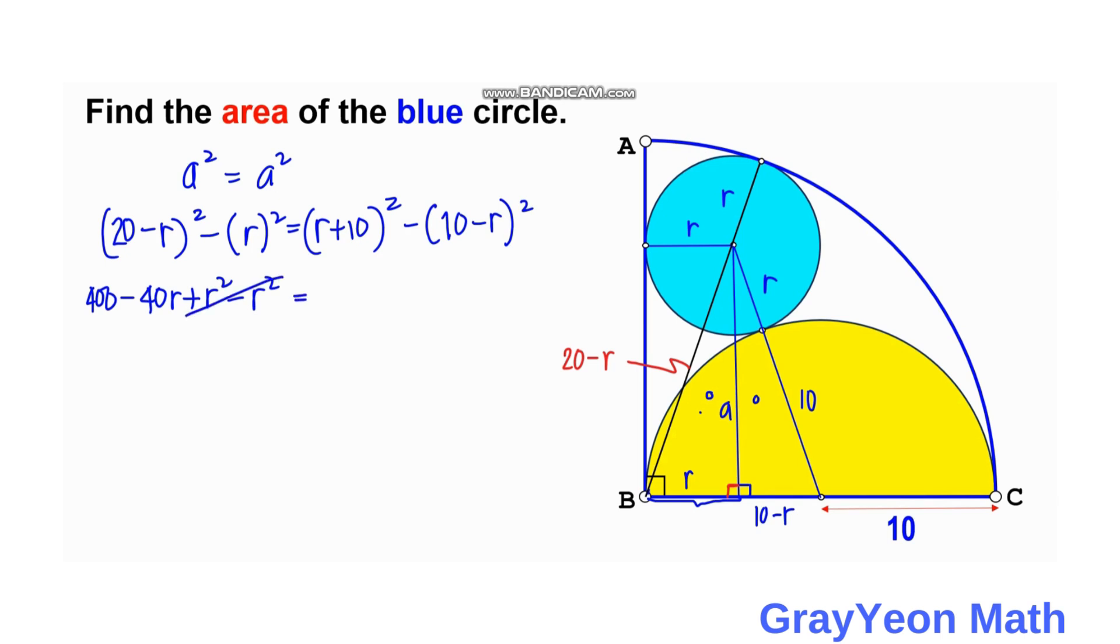And this can set us equal to r squared plus 20r plus 100 minus this 100 minus 20r minus 20r plus r squared. So we have here for the left 400 minus 40r, and for the right we have r squared. We just copy this 20r plus 100 minus 100 plus 20r minus r squared minus r squared.